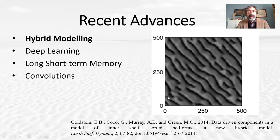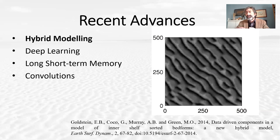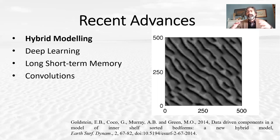One of these possibilities is what we tend to call hybrid modeling. Here you can see a bedform field — these are 500 meters, so very large bedforms developing in the inner shelf. Together with Evan Goldstein and co-authors, we developed a model that combines a description of physical processes, but some aspects of those processes are described through machine learning. For example, the development of wave-generated ripples at small scales is done using machine learning as a predictor. This is relatively new in our area but very common in other fields, where process-based models are combined with machine learning doing part of the job.